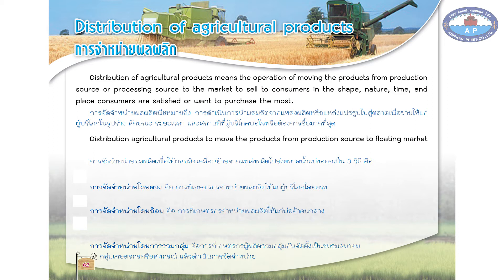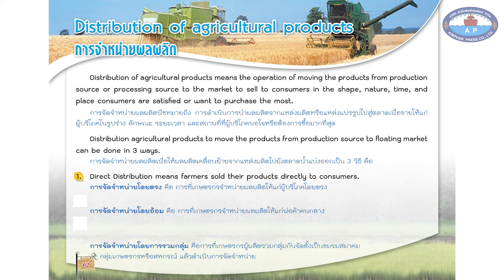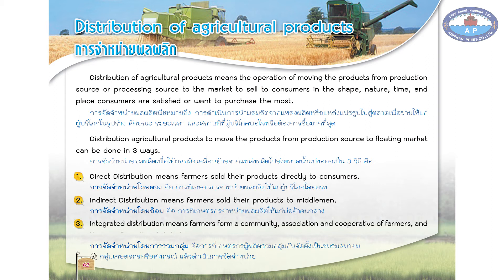Distribution of agricultural products to move the products from production source to the market can be done in three ways. 1. Direct distribution means farmers sold their products directly to consumers. 2. Indirect distribution means farmers sold their products to middlemen. 3. Integrated distribution means farmers form a community, association, and cooperative of farmers and then perform the distribution.